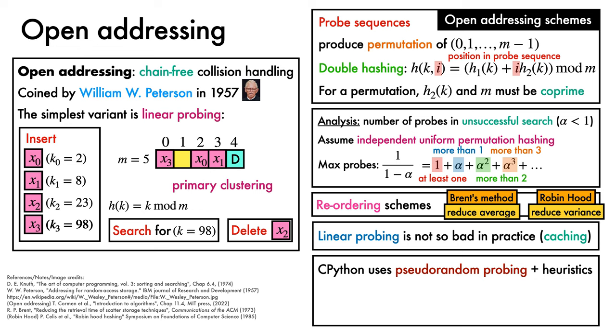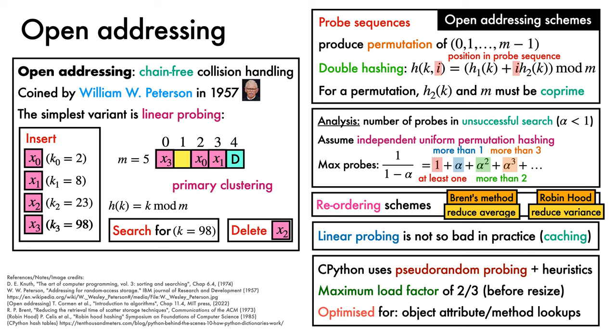CPython dictionaries use a maximum load factor of two-thirds, at which point they resize the underlying table, typically by doubling it to create more space. These choices are partly designed to work reasonably well across a wide range of scenarios, but they are particularly optimised for object attribute and class method lookups, since they are used internally by the interpreter to run Python code, and are thus executed many, many times.